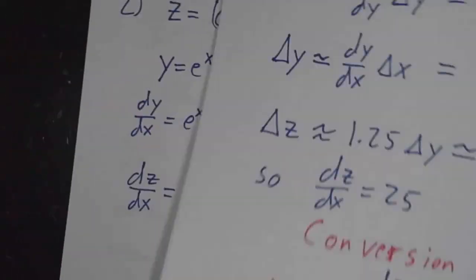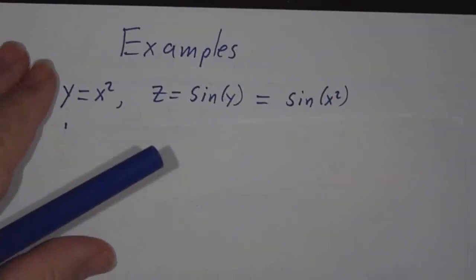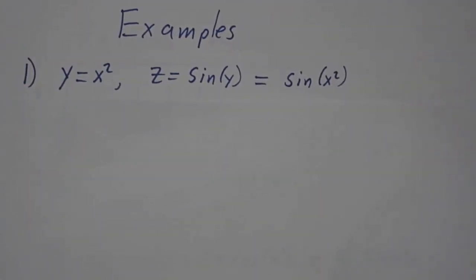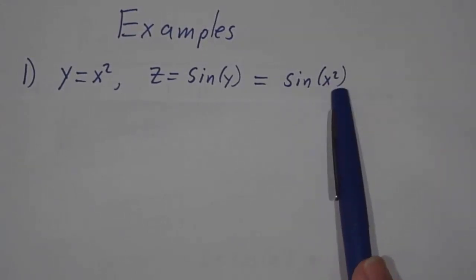Let's see how this works in practice. Suppose that y is x squared and z is the sine of y. In other words, z is the sine of x squared. And we want to figure out what is the derivative of the sine of x squared with respect to x.